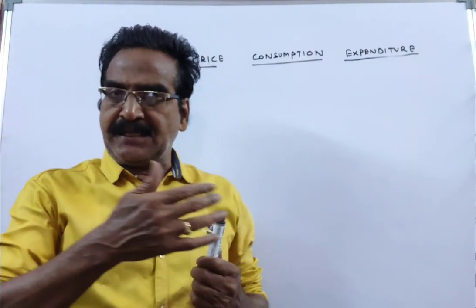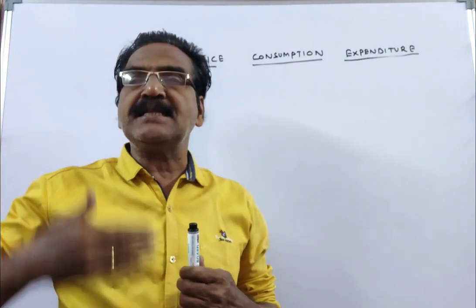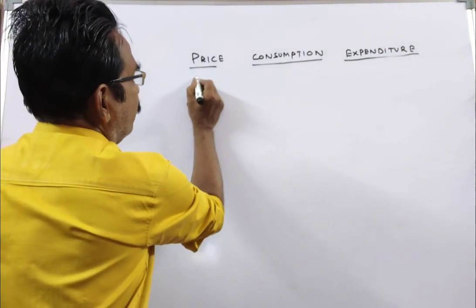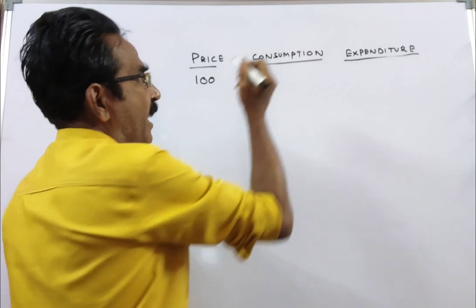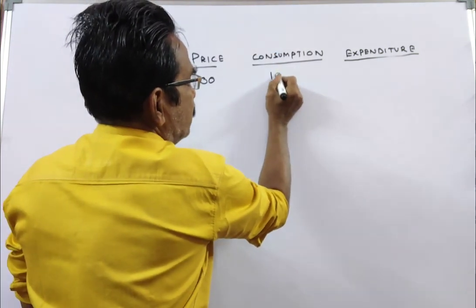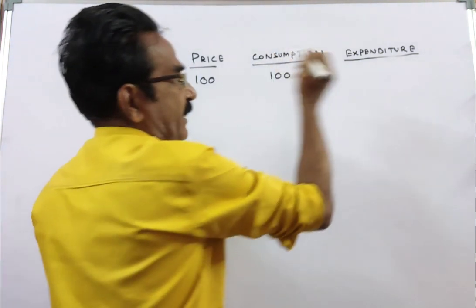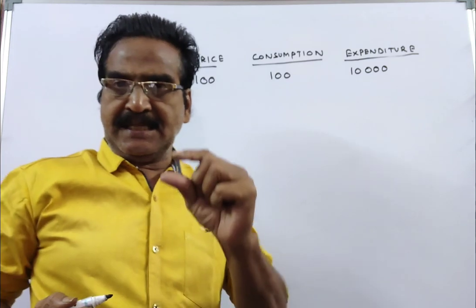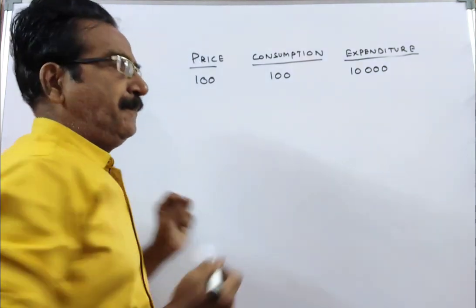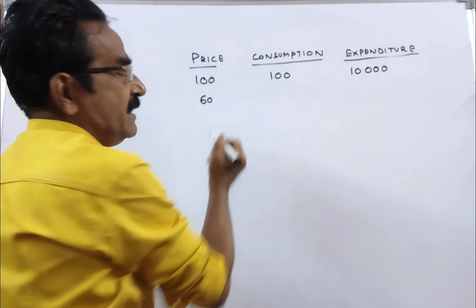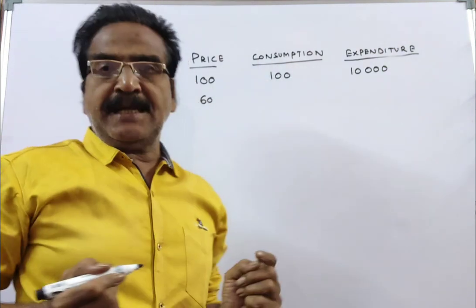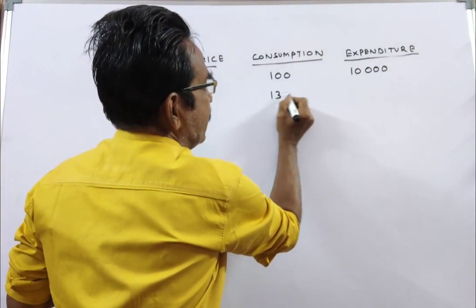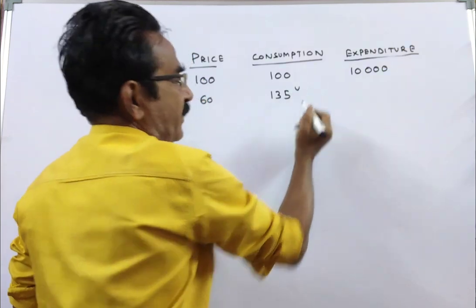The price of a commodity is reduced by 40% and the consumption is increased by 35%. Friends, say the original price of the commodity is 100 rupees a unit and the earlier consumption was 100 units. Then the earlier expenditure was 10,000. Now the price is reduced by 40%, so the present price is 60 rupees a unit, and the consumption is increased by 35%, so the present consumption is 135 units.